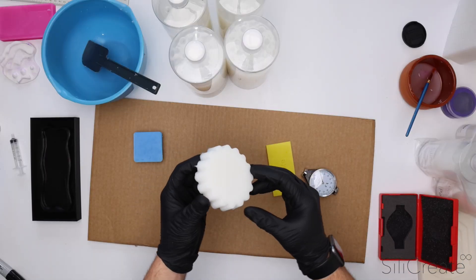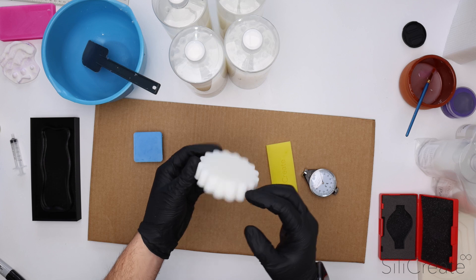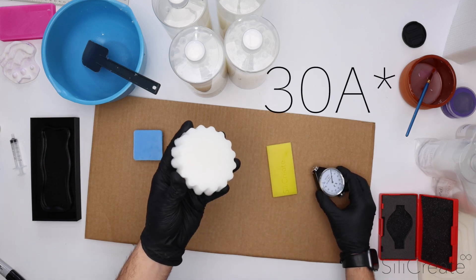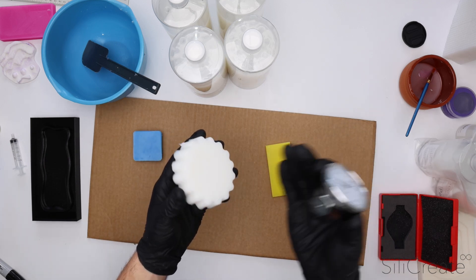The white piece we were shooting for a shore hardness of around 25A. This was done with our 15A and 35A. So this one had a little bit more 30A than it did 15A.